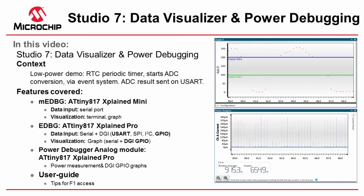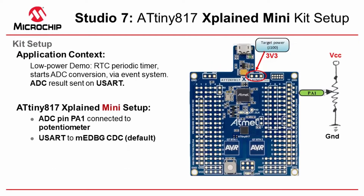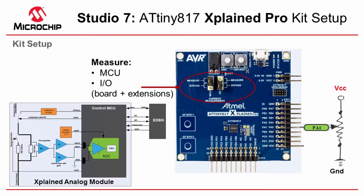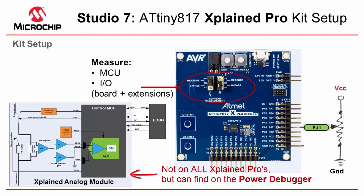The demo I have is a low-power demo with the ATtiny817. We're using an RTC periodic timer starting an ADC conversion via the event system and then sending the ADC results on the UART. The ADC pin we use is PA1, which is connected to a pot between VCC and ground. The UART is automatically available on the Embedded Debugger CDC. On the Xplained Pro, a similar connection with the pot and the UART is again automatically connected to the EDBG, and there is additionally the Xplained analog module, which allows us to measure the MCU and/or the IO — the IO being the board and anything plugged into it.